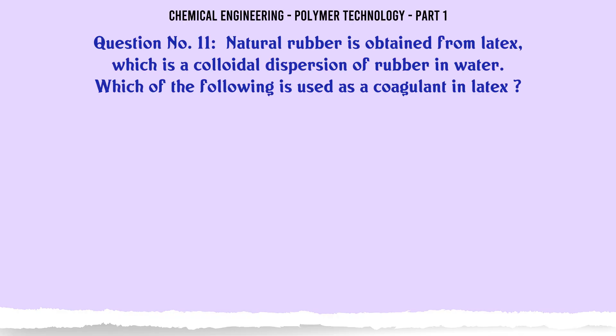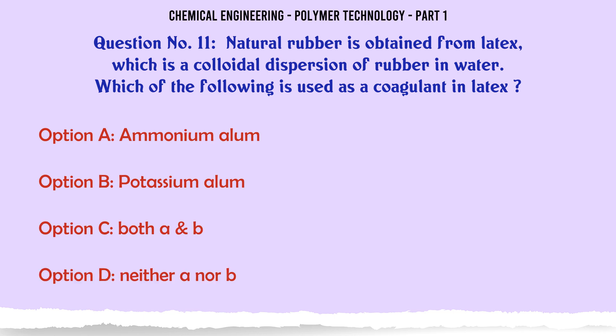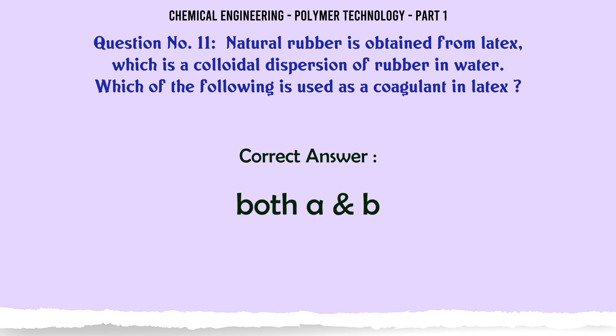Natural rubber is obtained from latex, which is a colloidal dispersion of rubber in water. Which of the following is used as a coagulant in latex? A. Ammonium alum, B. Potassium alum, C. Both A and B, D. Neither A nor B. The correct answer is Both A and B.